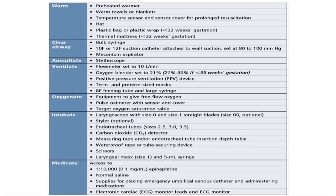The equipment needed in a nutshell: to provide warmth, we need a preheated warmer, warm towels or blankets, a temperature sensor and sensor cover for long resuscitation, a hat, a plastic bag or wrap mainly for preterm babies especially less than 32 weeks, and a thermal mattress for preterm babies. To clear the airway, we require a bulb syringe and a 10 or 12 French suction catheter attached to wall suction set at 80–100 mmHg. As per new guidelines, a meconium aspirator is not required. A stethoscope is also required.